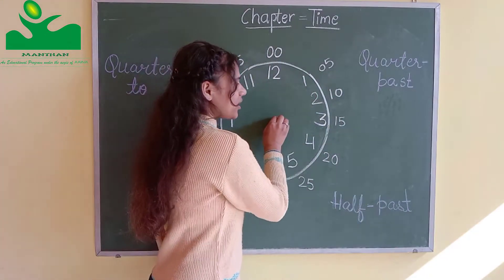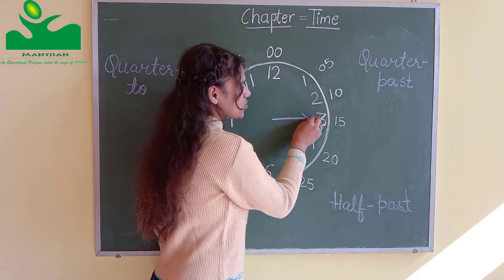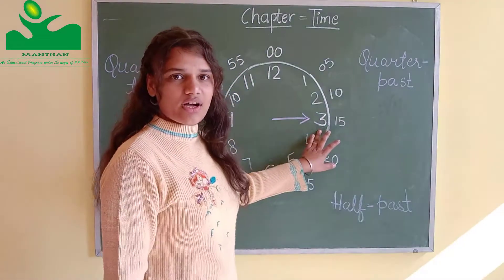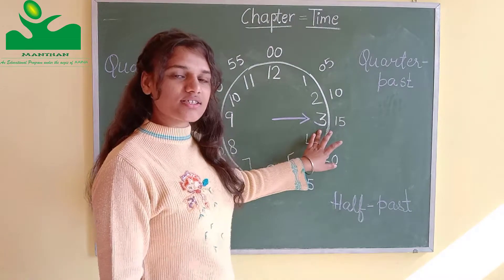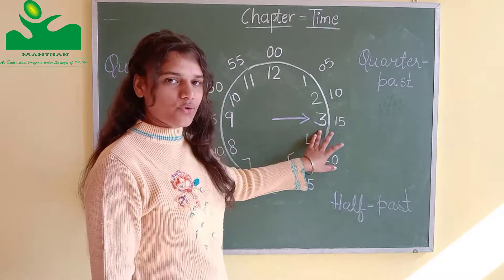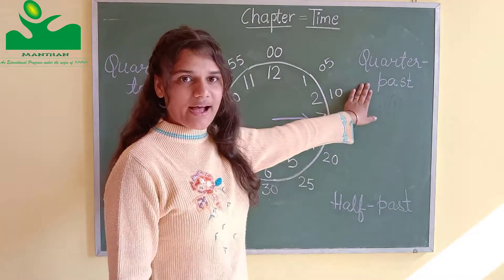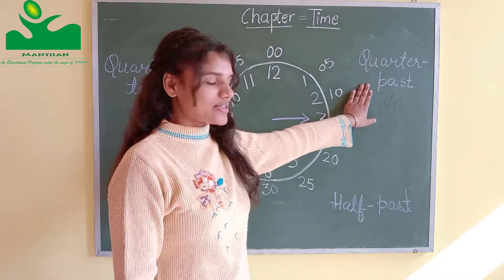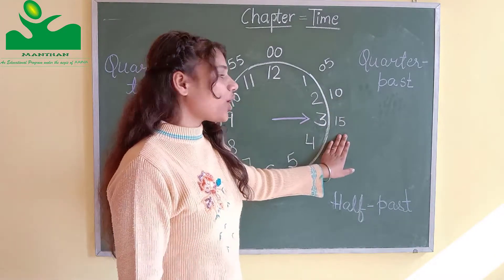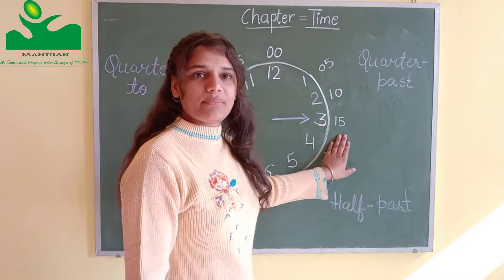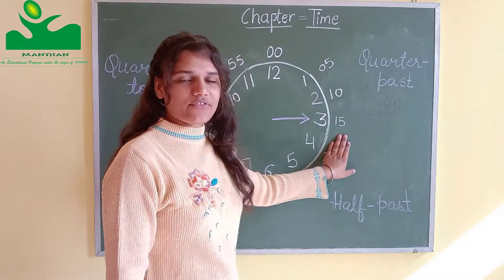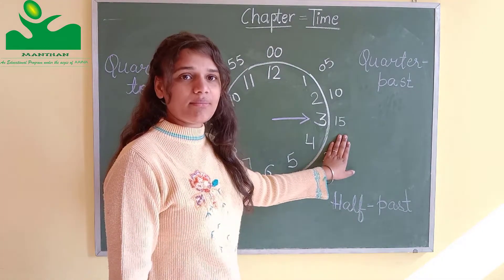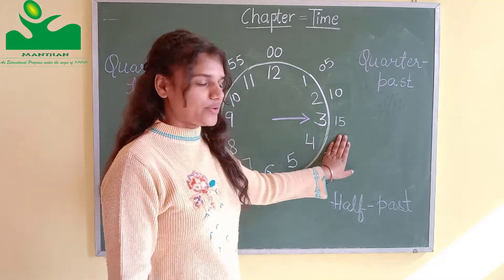When the minute hand of the clock is towards three, it means quarter past. Quarter past means fifteen minutes after an hour.